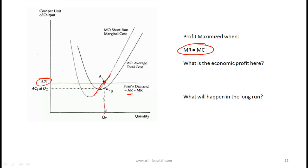What is the cost at this quantity? That cost is based on point B on the average total cost curve. The cost per item is given by that number, and the revenue is given by the price. So the total profit is this rectangle — profit per item multiplied by the number of items. We have an economic profit here because cost is less than revenue per item.